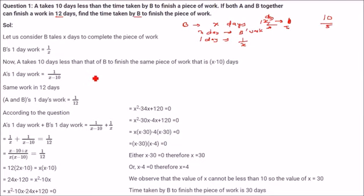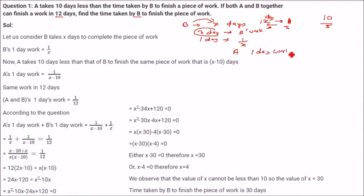Now A takes 10 days less than B to finish the same piece of work. So if X is the days chosen for B, for A we choose 1 by X minus 10, because A takes 10 days less than the time taken by B.